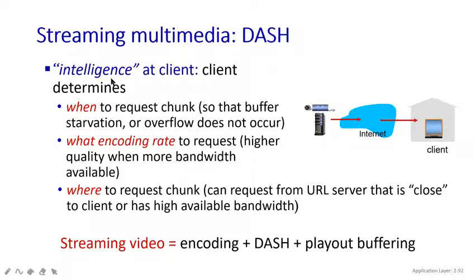One more important aspect is client intelligence: the client determines when to request a chunk, what encoding data rate to use, and where to request the chunk from. These when, what, and where decisions are all handled on the client side.